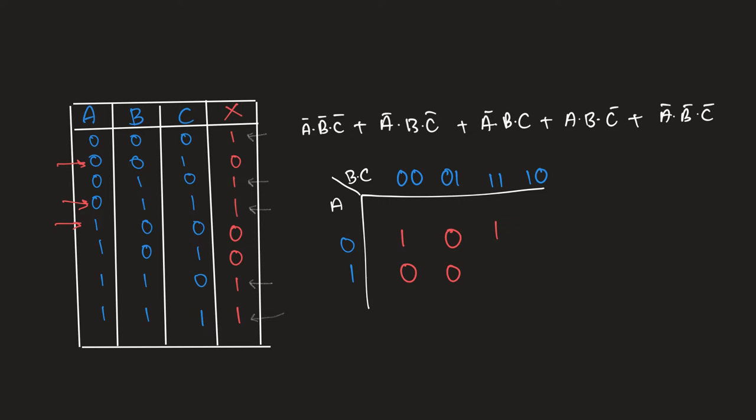For A=0 and BC=10, the output is 1, so we note down 1. For A=1 and BC=10, it's also 1. So this is basically how a kmap table looks like — let's solve it now.